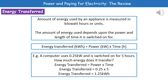Flick back to page 2 and find the equation: energy transferred equals power times time. Substitute in the numbers — power is 0.25, time is 5 — so 0.25 times 5 gives you 1.25 kilowatt hours.